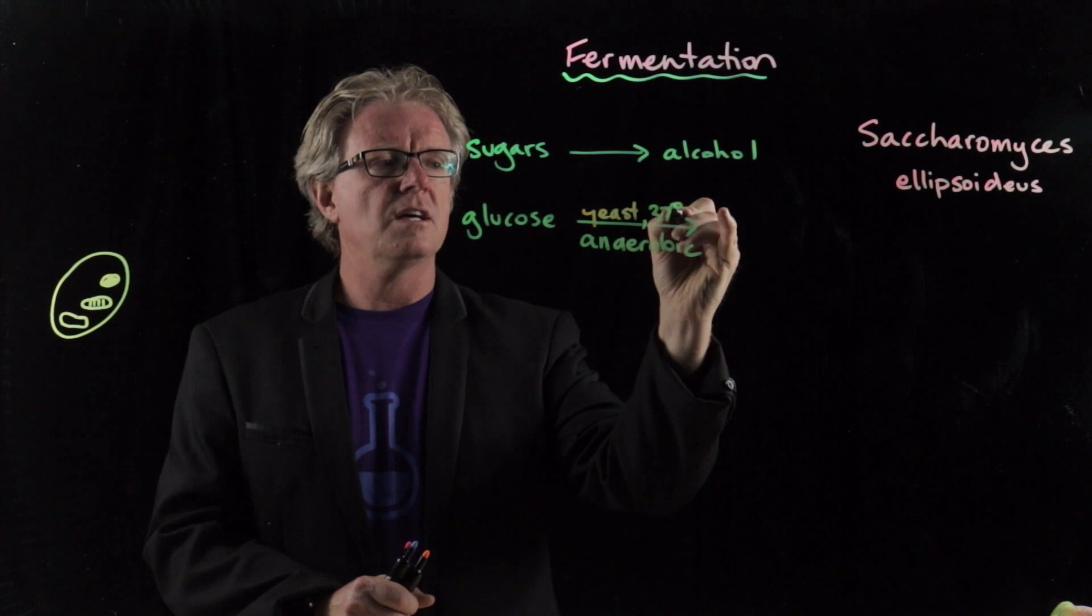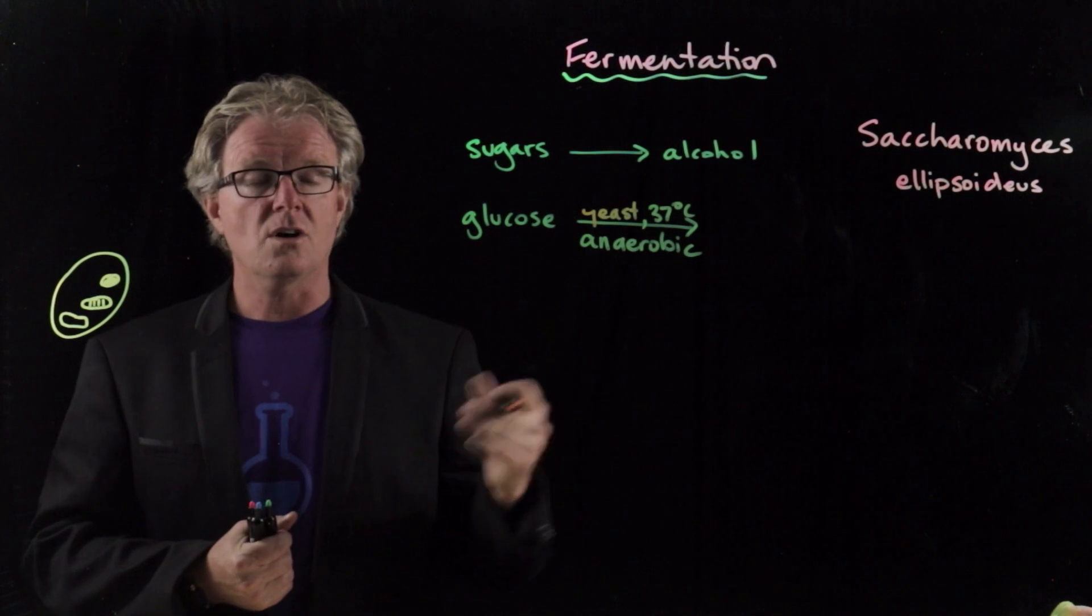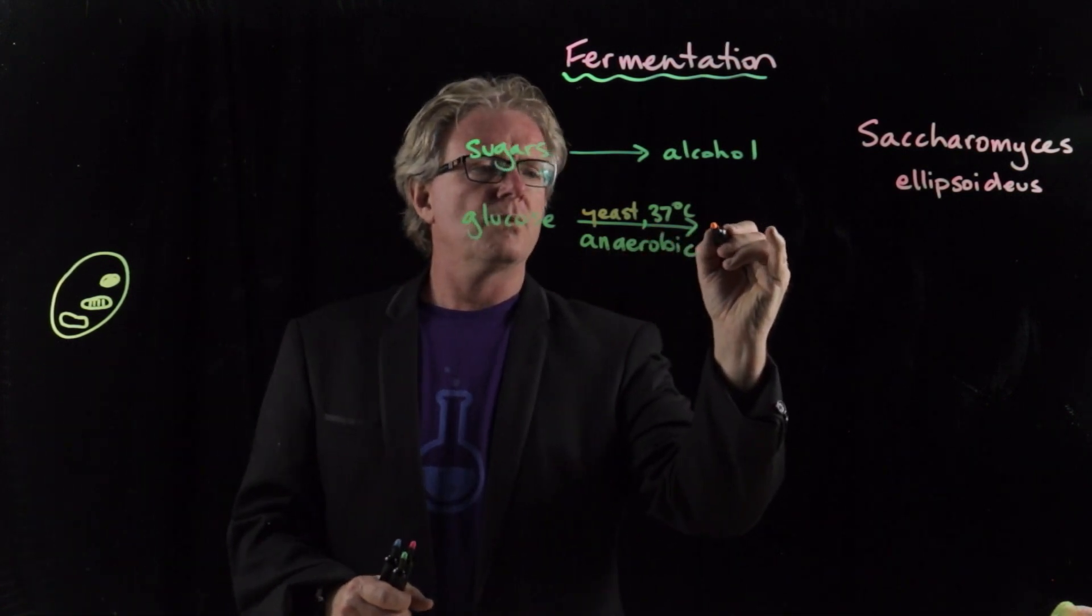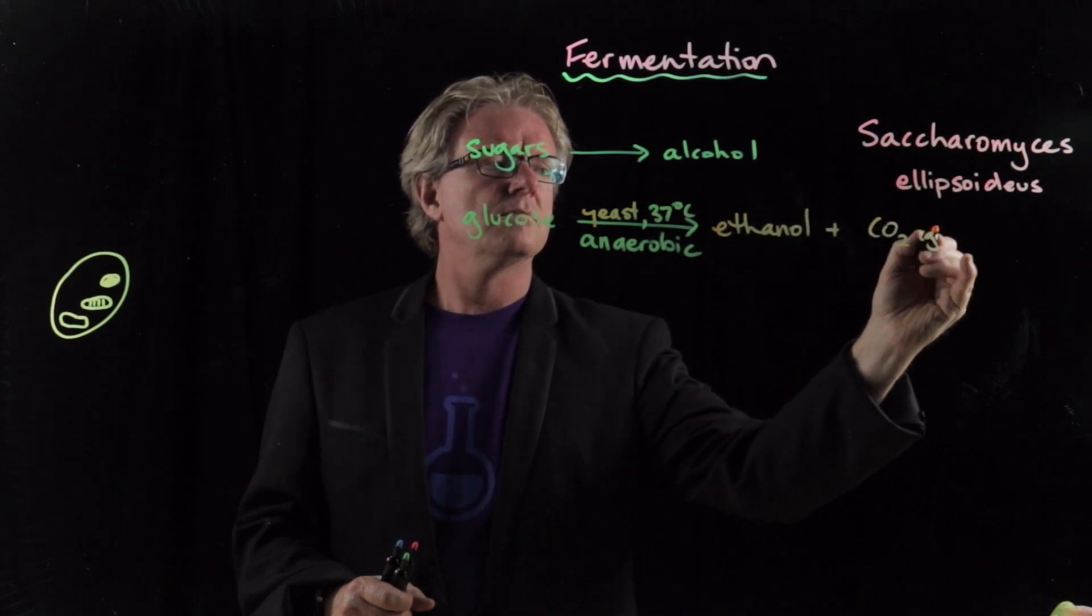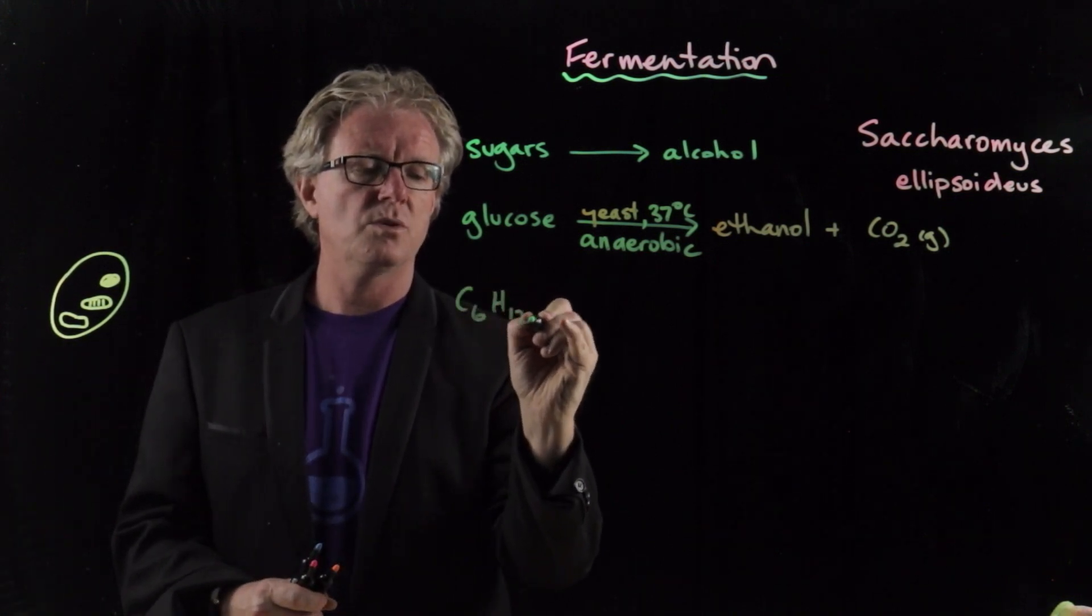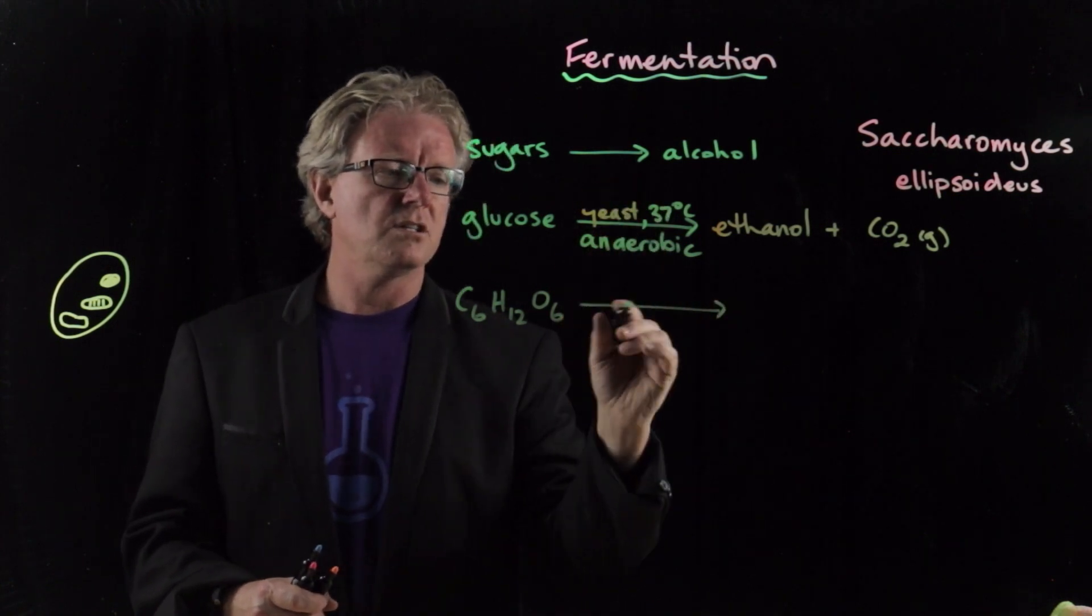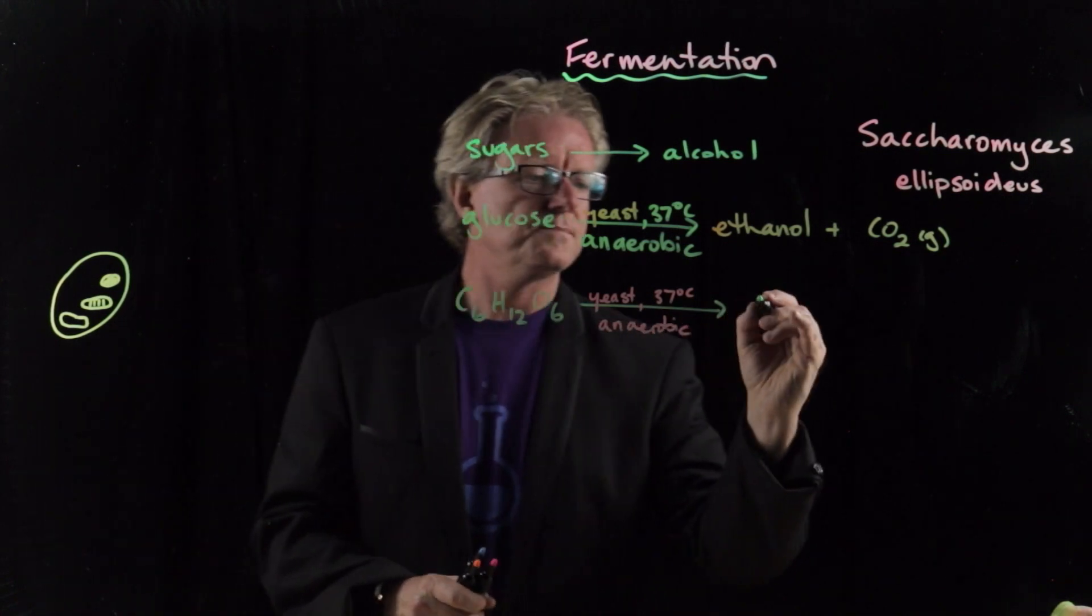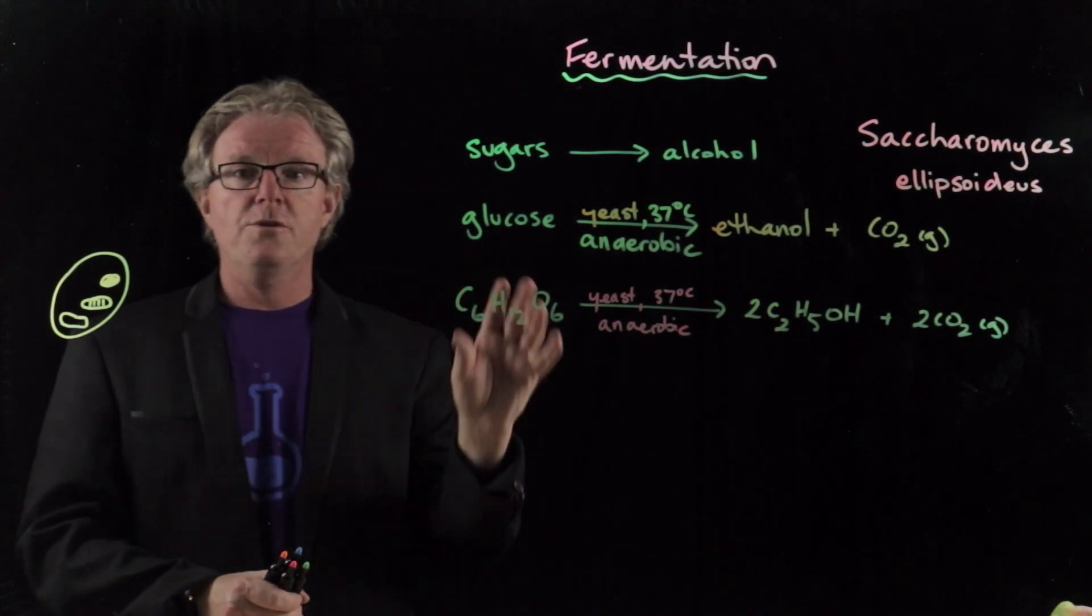We say that it also happens at 37 degrees Celsius as well. That is an optimal temperature for the enzymes activation. Okay, so let's write ethanol here, but it also produces carbon dioxide gas. So in a proper equation here, we have C6H12O6 and we write the reaction conditions. And then of course we make ethanol and two carbon dioxides. So that's fermentation.